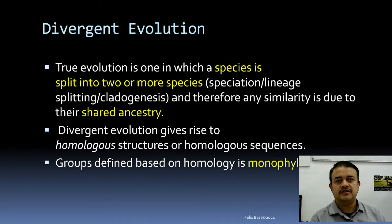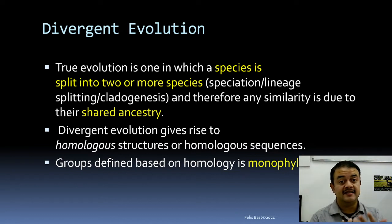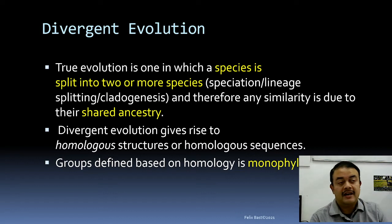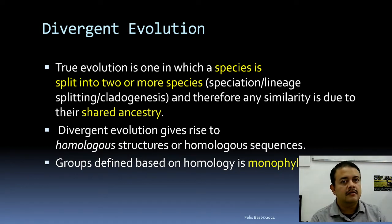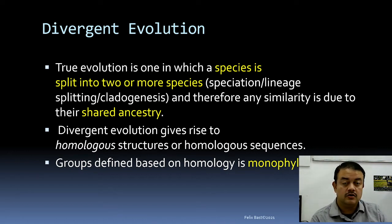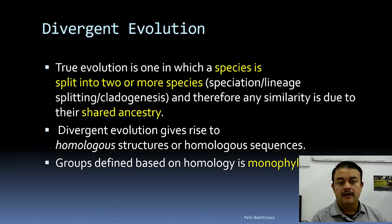Divergent evolution is considered true evolution. The purpose of a phylogenetic tree is to reveal divergent evolution. Any similarity among organisms is due to shared ancestry. If you define groups based on traits resulting from divergent evolution, those are called homologous traits — for example, mammals defined by the mammary gland. Divergent evolution gives rise to homologous structures in morphology and homologous sequences in DNA.